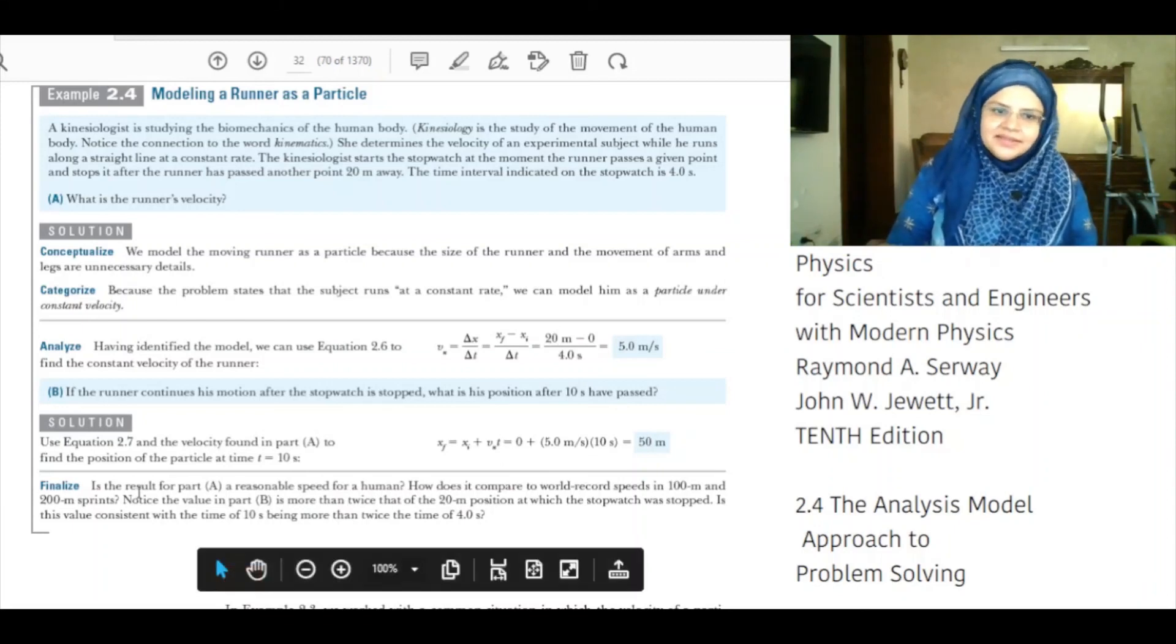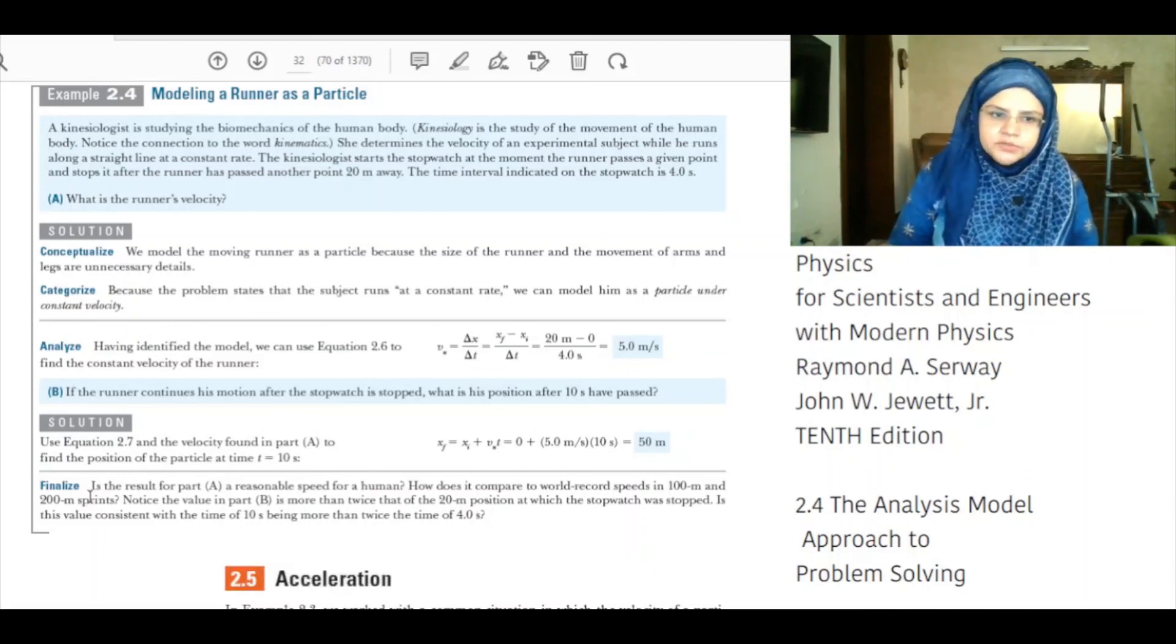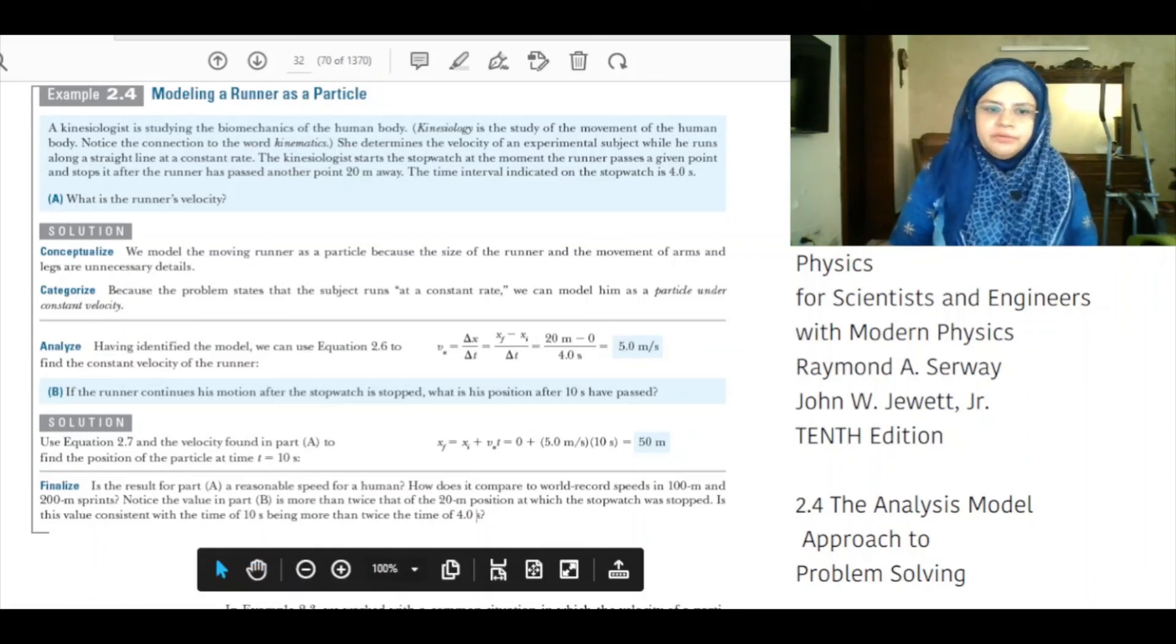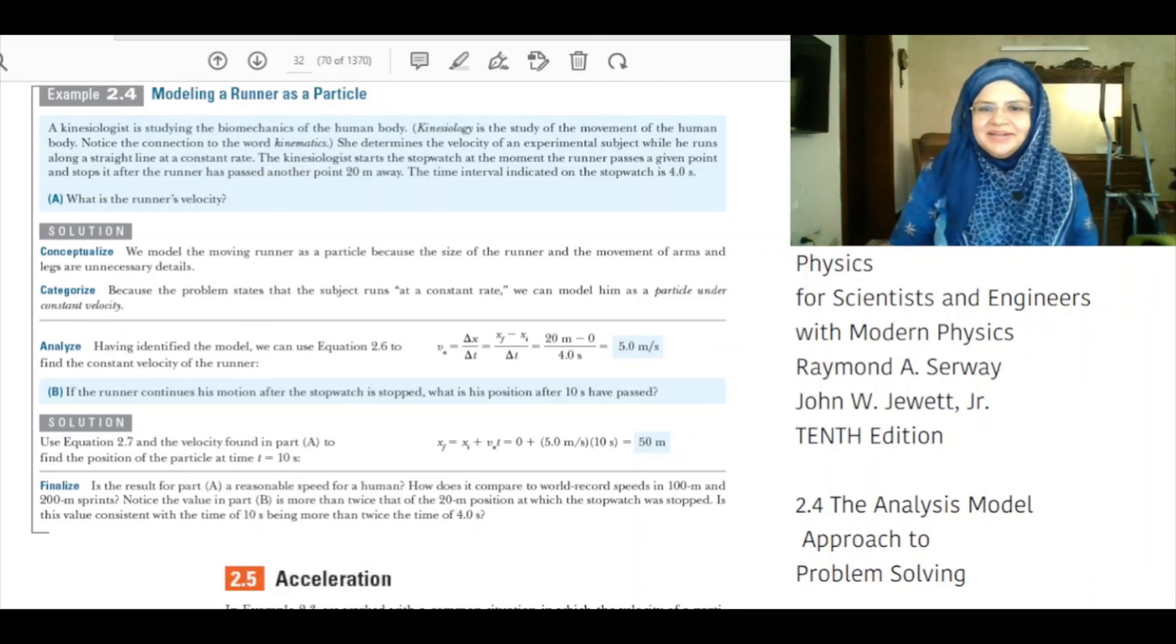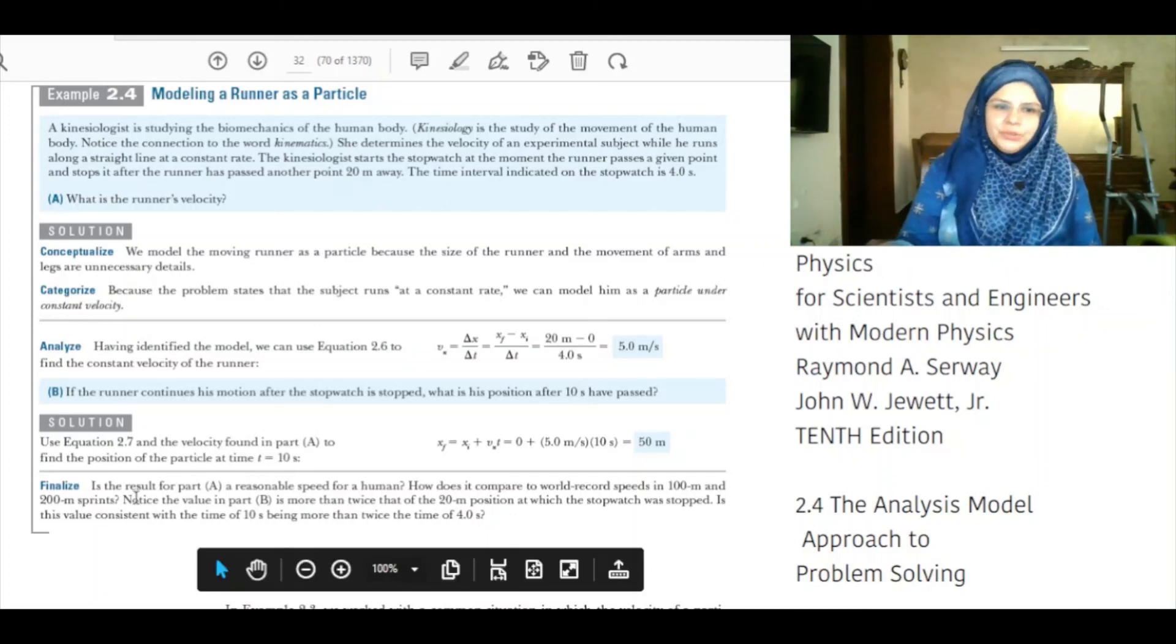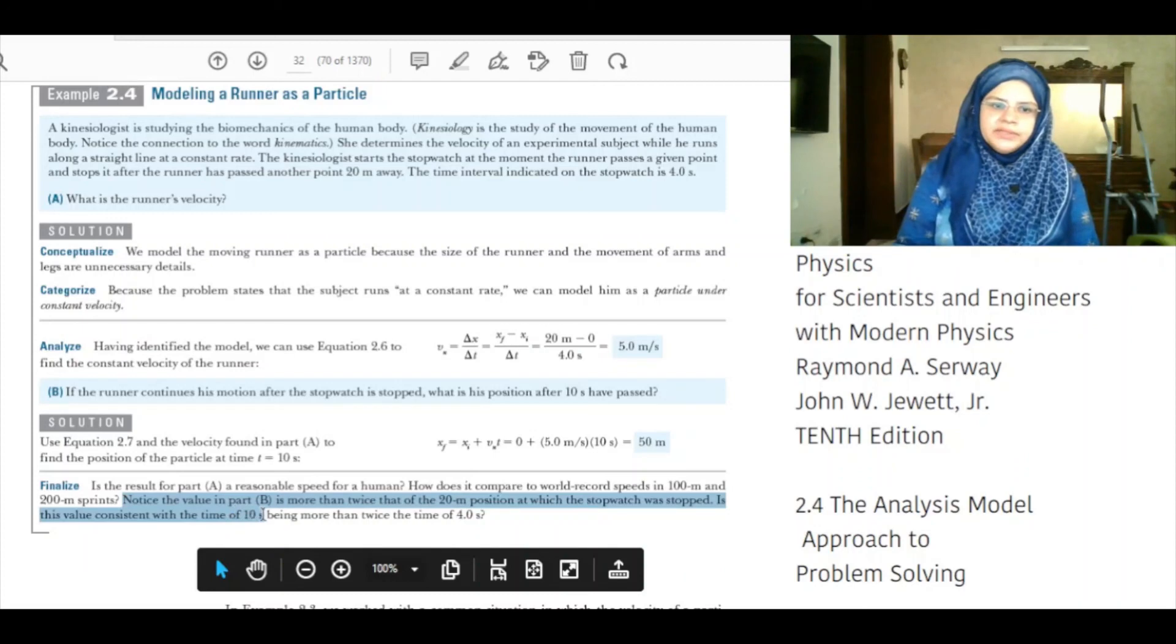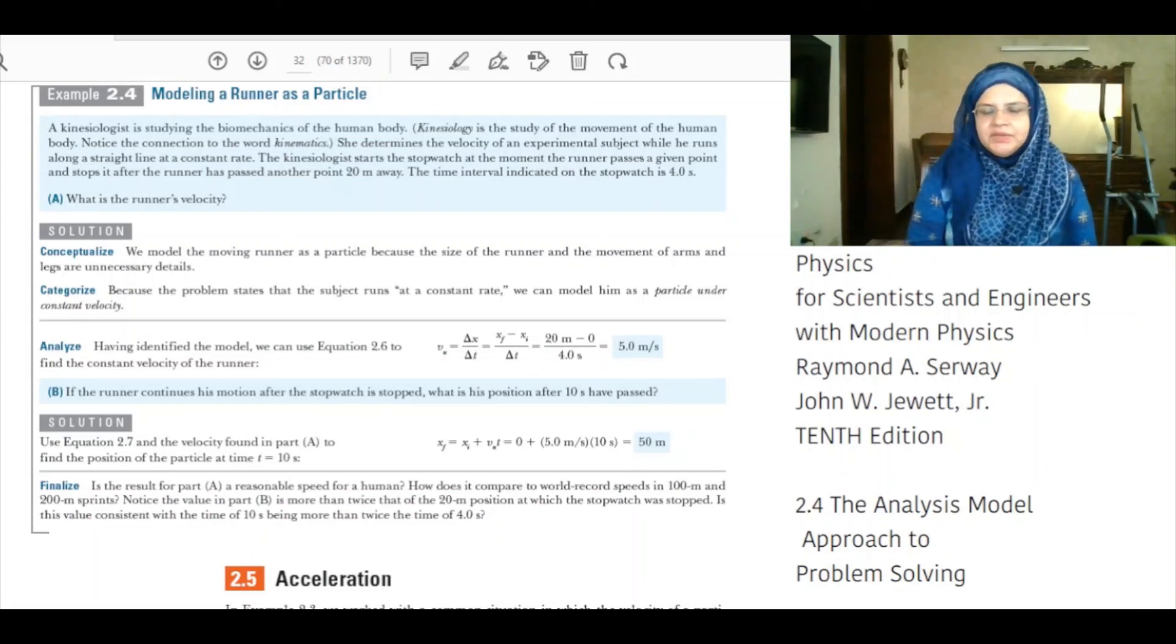Finalize: Is the result of part A a reasonable speed for a human? Yes, it is. How does it compare to the world record speed in 100 meter and 200 meter sprints? The average speed in 100 meter and 200 meter sprint is about 7 meters per second. Notice that the value in part B is more than twice that of the 20 meter position at which the stopwatch was stopped. Is this value consistent with the time of 10 seconds being more than twice the time of 4 seconds? Yes, it is consistent. 50 meters divided by 20 meters gives the ratio of 2.5 and 10 seconds divided by 4 seconds gives the ratio of 2.5.